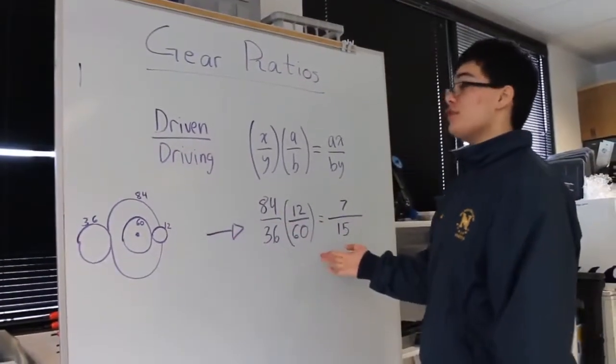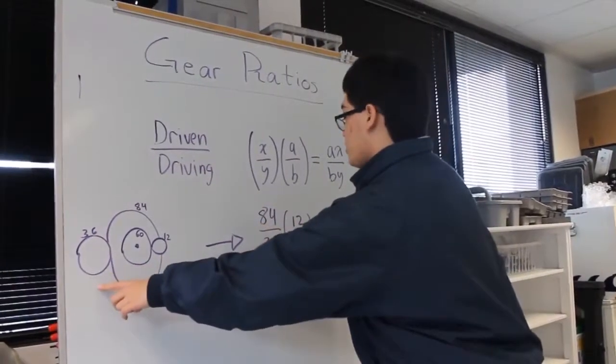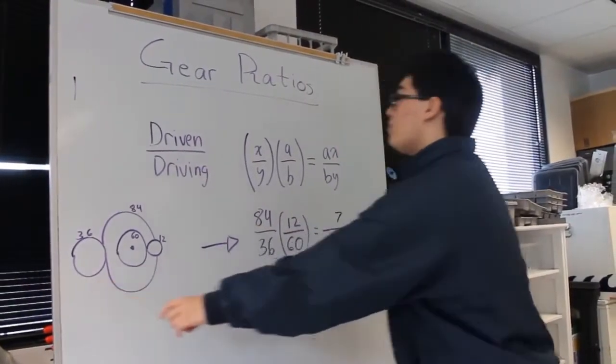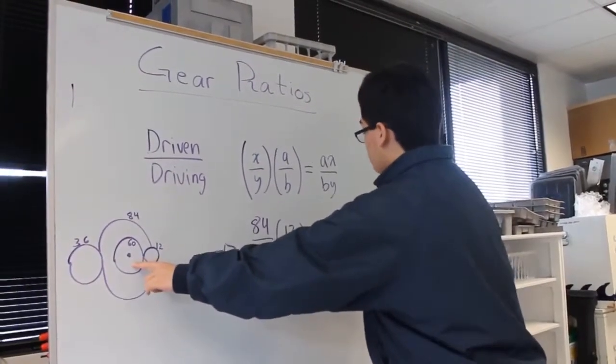If I want to do the math for this, what I'll do is I will take the driven gear in the first gear ratio over the driving gear in the first gear ratio, and I'll multiply that by the driven gear in the second gear ratio over the driving gear in the second gear ratio. And that will eventually simplify to a 7 over 15 gear ratio.